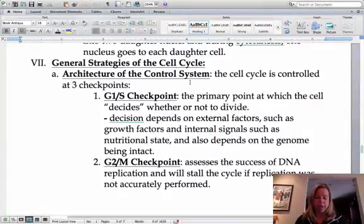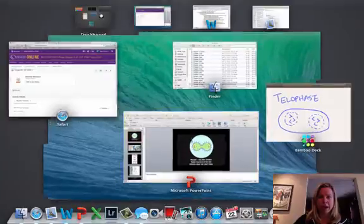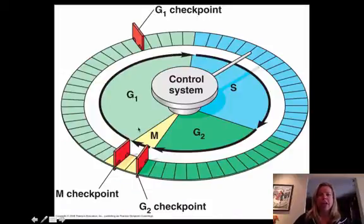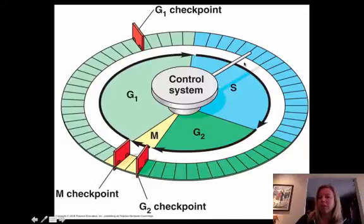So the first one is going to be the G1/S checkpoint. This is where the cell is going to decide whether or not to divide. It's going to happen at the end of the G1 cycle. So if we go back to our picture here, you've got that G1/S checkpoint. It's going to happen towards the end of G1, and what it's going to do is look at the nutritional state of the cell. Because there's no point in going on to the S phase where it's going to copy the DNA if everything didn't go correctly in G1.